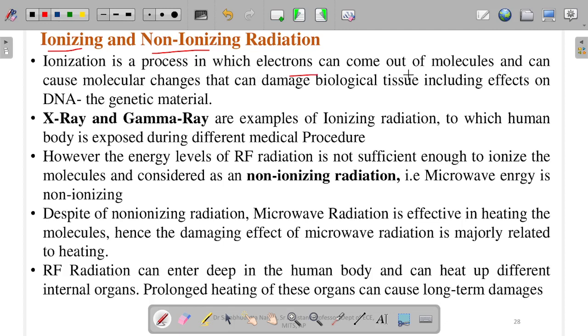Before going to the effects, we need to know about ionizing and non-ionizing radiation. Ionization is a process in which electrons come out of molecules and cause molecular changes that can damage biological tissue, including effects on DNA, the genetic material. You might know about Hiroshima and Nagasaki where America dropped atomic bombs. Many generations suffered health problems and disabilities because the radiation changed the DNA structure. This is the effect of radiation, the effect of ionization.